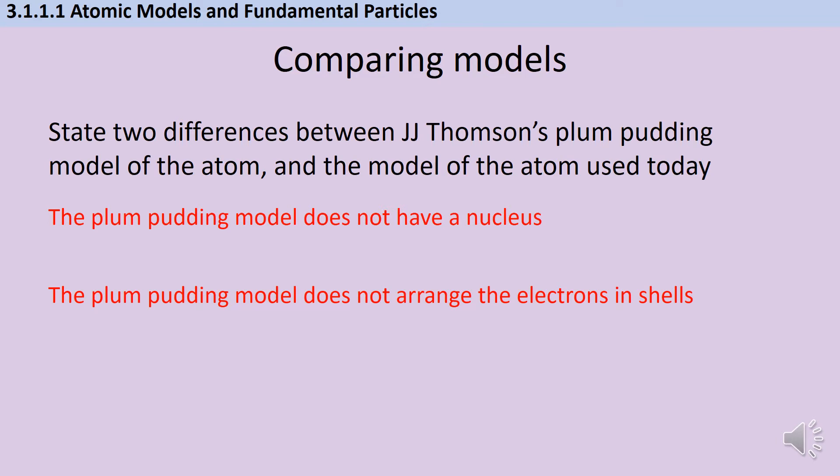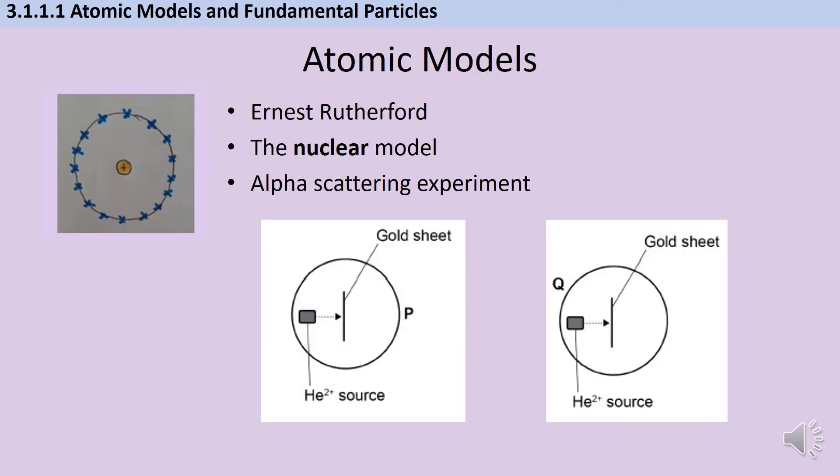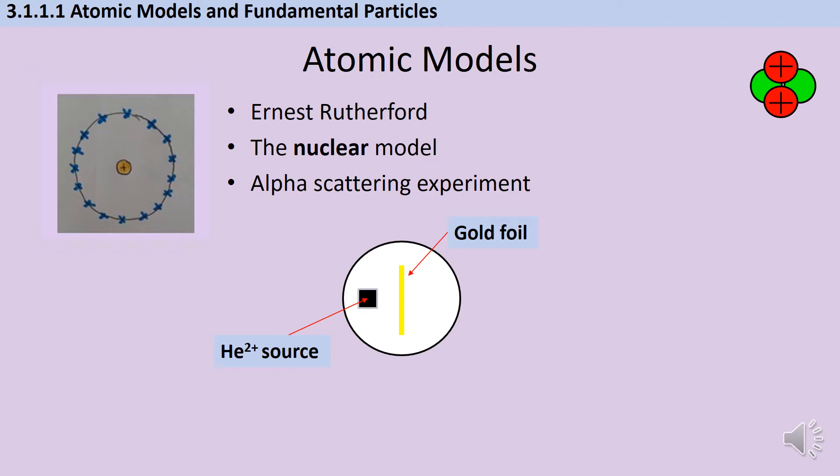So our two marks here would be for saying that the plum pudding model doesn't have a nucleus, and the plum pudding model doesn't arrange the electrons in shells. So from JJ Thompson and his plum pudding model, we move on to New Zealand-born physicist Ernest Rutherford and the nuclear model, and he's one of the few scientists where you should really know a bit about the experiments he did to draw his conclusions.